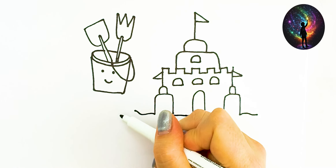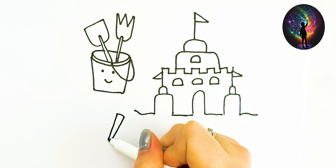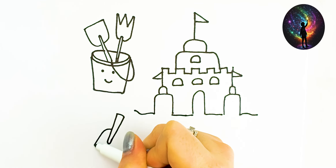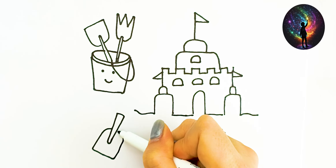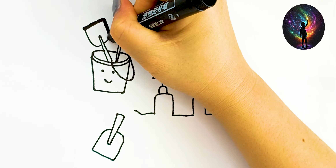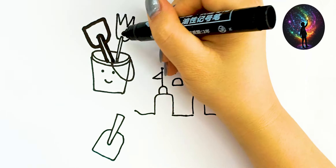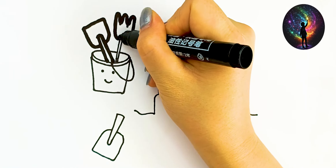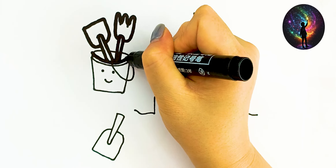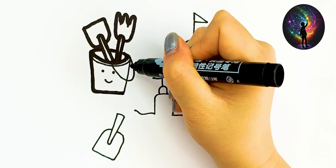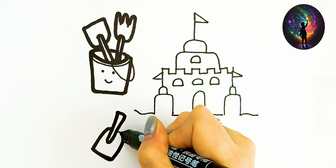A, B, C, D, E, F, G, H, I, J, K, L, M, N, O, P, Q, R, S, T, U, V, W, X, Y, and Z. Now I know my ABCs. Next time won't you sing with me?